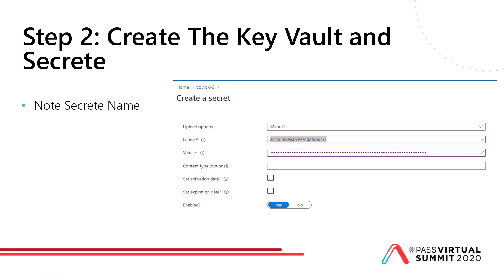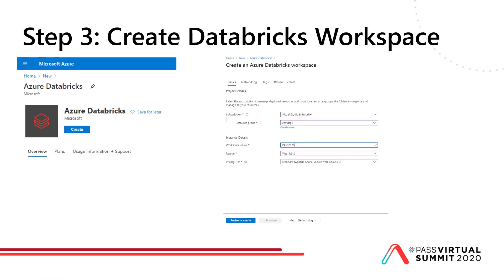As before, we create a secret — the account key access for Databricks — with that key. The key is not visible. There are no activation dates, so it's valid immediately and won't expire. In Databricks, we'll create our Databricks workspace, put it on the Visual Studio subscription and COVID-RG2 resource group. I've found it works best to keep your Key Vault, Databricks workspace, and Blob Storage all in the same resource group to get everything to work correctly with Databricks.